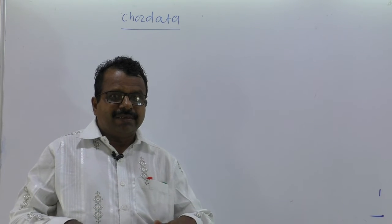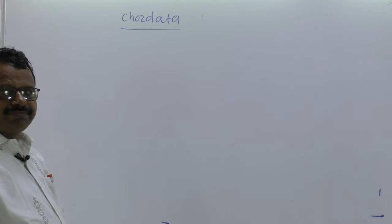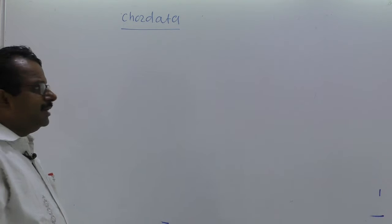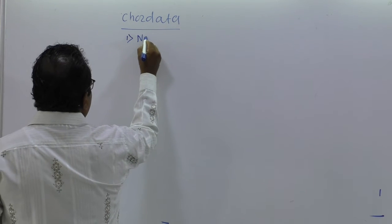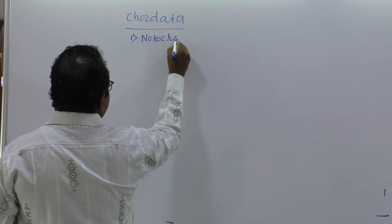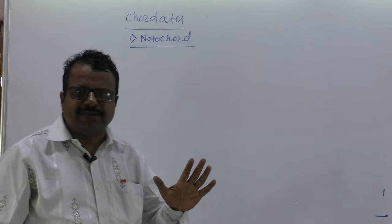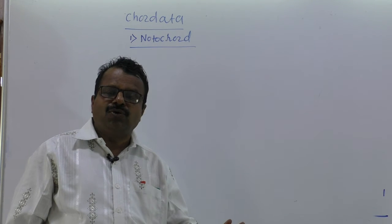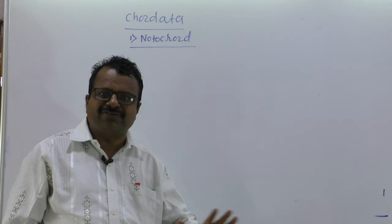Now after this, we are going to study Chordates. Chordata madhe mahatvache character aahe, pan teen character must aahet. First is the Presence of Notochord. At least in the embryonic condition, Notochord must be present.